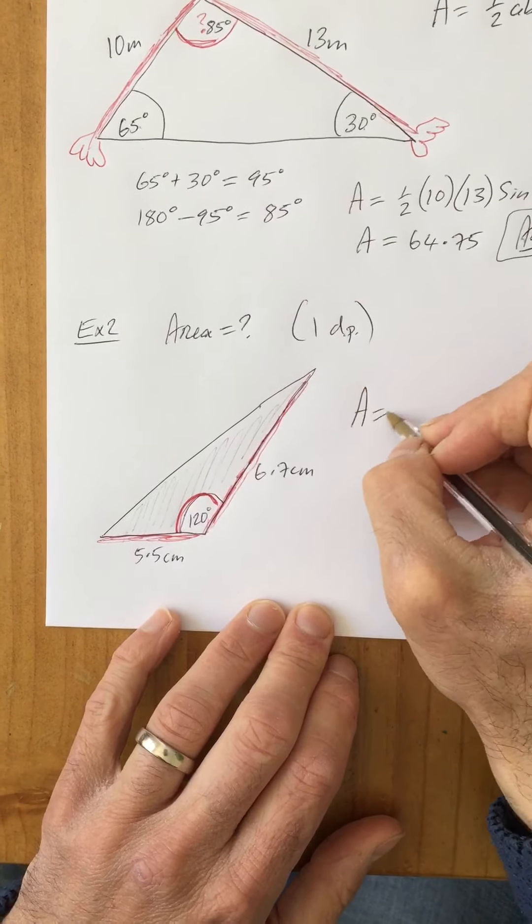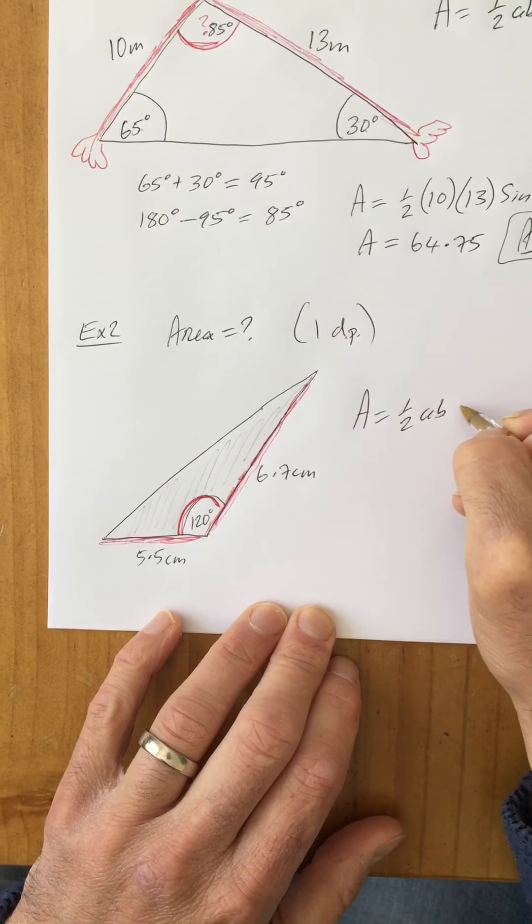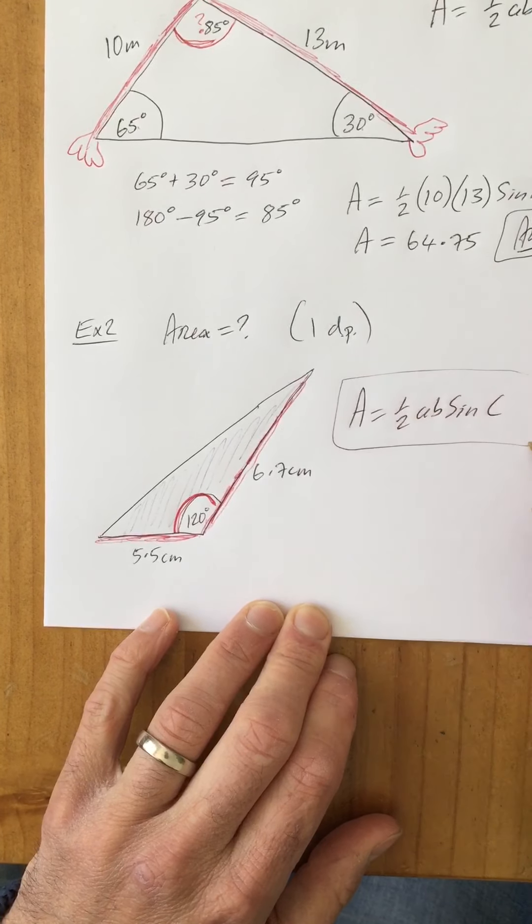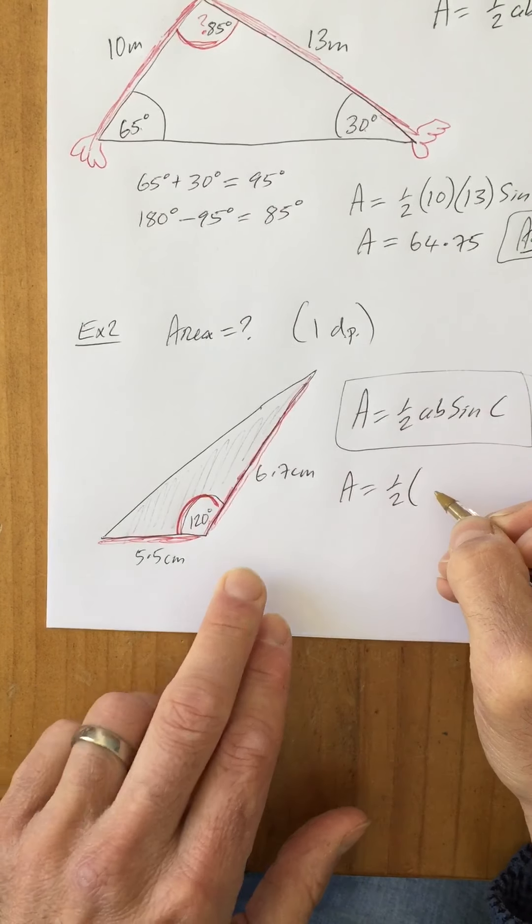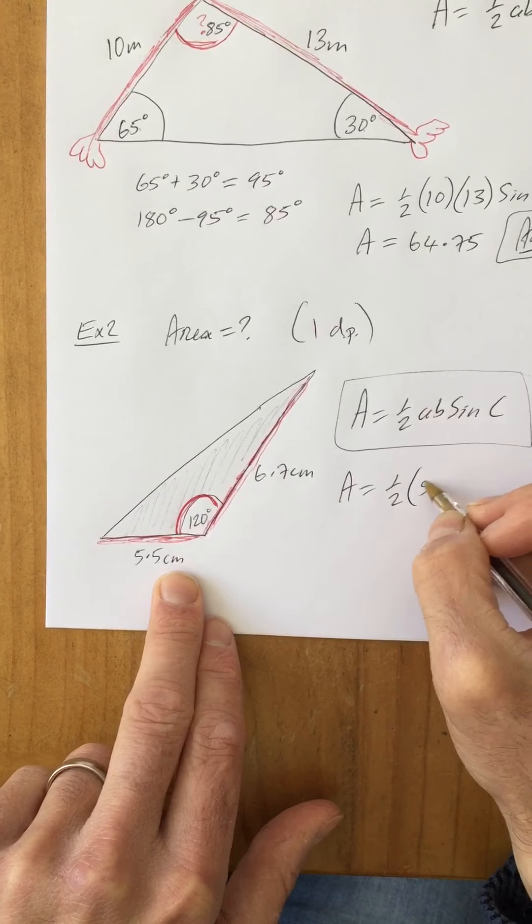The area is a half ab sine c—that's in our maths tables if you ever forget it. So the area is a half times the first arm—it doesn't matter which one you call the first arm—let's call it 5.5, multiplied by the second arm which is 6.7...